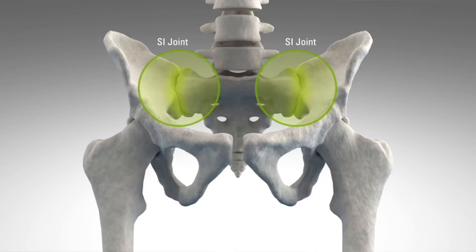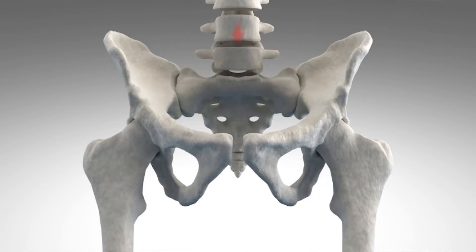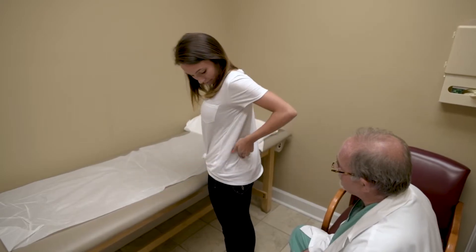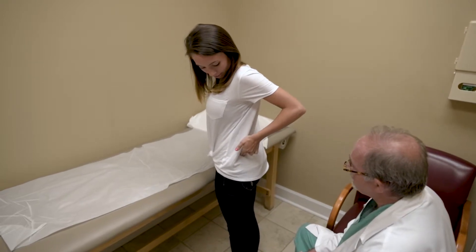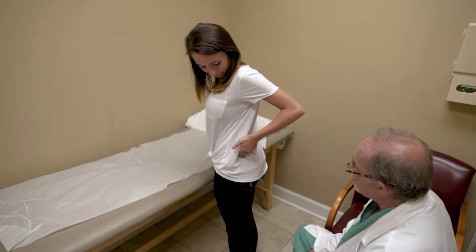The SI joint is a joint located around the pelvis and it is the primary weight-bearing joint of the upper torso to the lower torso. SI joint pain can present as pain in the lower part of the back, and one of the tests for it is called Fortin's finger sign, where you ask the patient to point exactly to where the pain is, and typically they'll point to the lower part of the back around the posterior superior iliac spine.